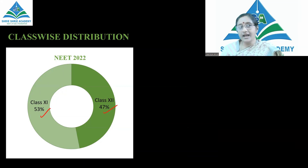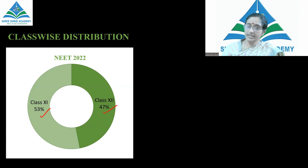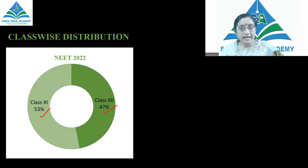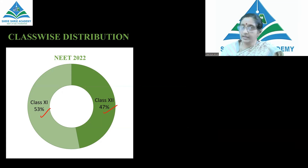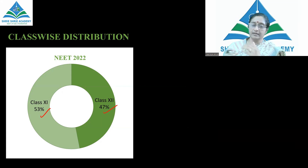Regarding the alignment of questions, we can expect questions related to reproduction in plants, morphology, the molecular basis of inheritance, and the biomolecules topic. These topics are associated in a shuffling manner. All the questions are right from the NCERT.